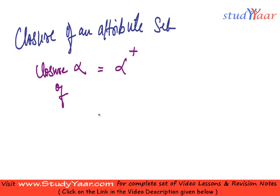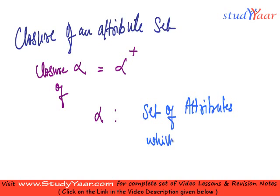Let's suppose I am finding a closure on alpha, then closure of alpha would be set of attributes which are determined by alpha. It is the set of attributes which are determined by alpha or which are functionally dependent on alpha.